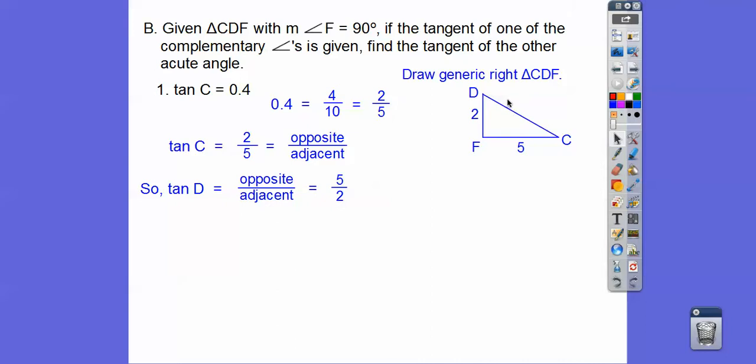We could use the Pythagorean theorem also and get this side right here and get some radical. Let's see, that's 2 squared is 4, 25. So this is the square root of 29. So if I asked for, say, the sine of C, the sine of C would be 2 over root 29, and then you'd rationalize that.